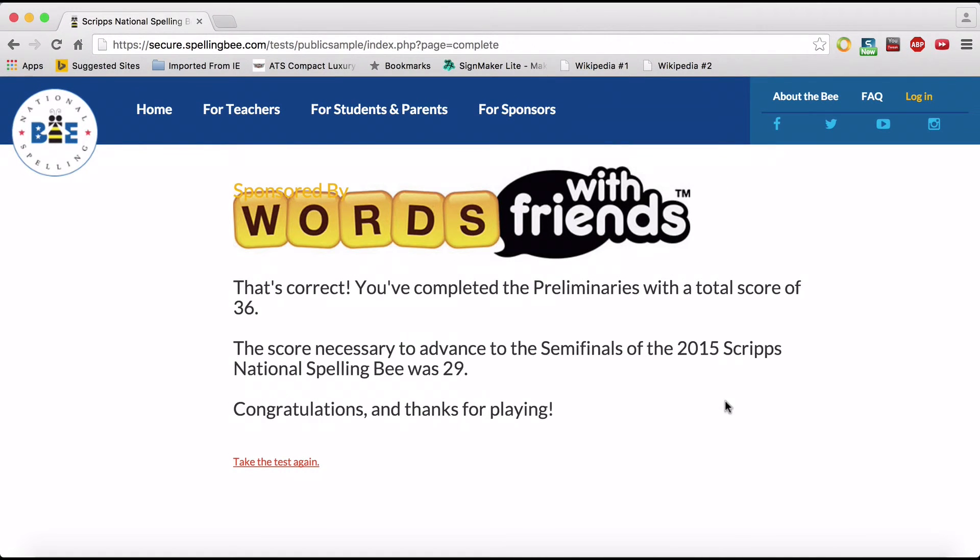And we get it correct. 36. 36. This is the highest score you can get. That's correct. You completed the preliminaries with a total score of 36. The score necessary to advance to the semifinals of the 2015 Scripps National Spelling Bee was 29. Congratulations.